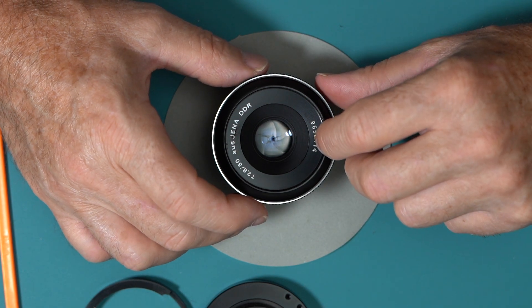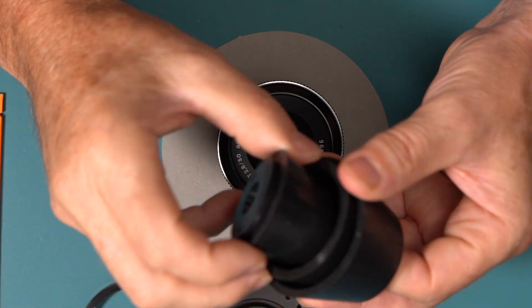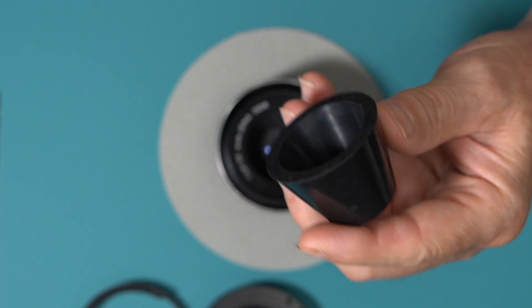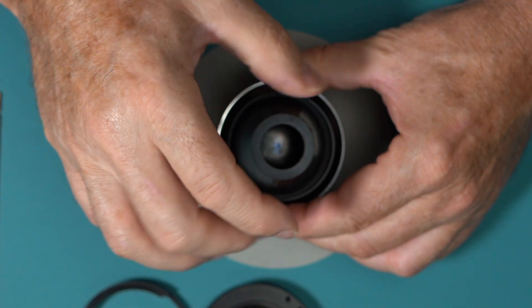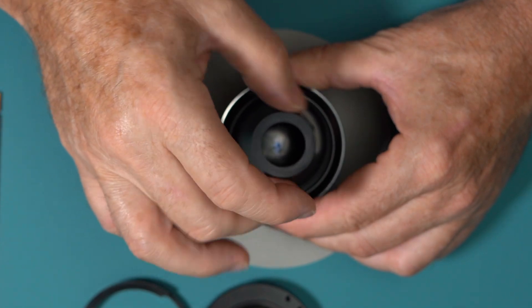The next step, we're gonna remove this cover here. I'm using this rubber compression tool, so I just put it here on the lens and this is really easy, just remove that.